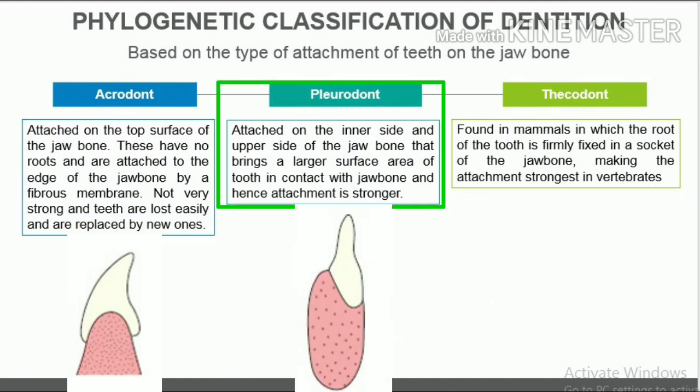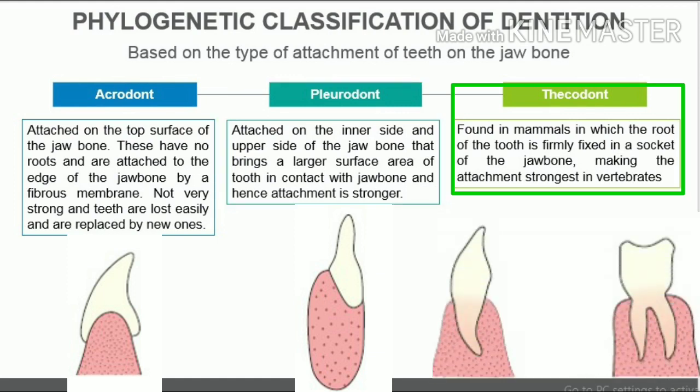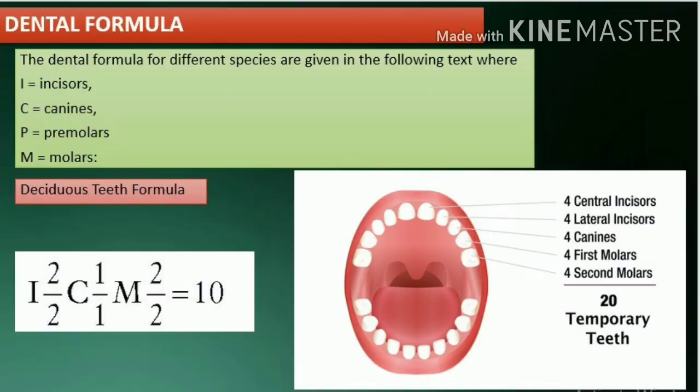Acrodont attachment is not very strong and teeth are lost easily and replaced by new ones. Pleurodont teeth are attached on the inner side and upper side of the jawbone, bringing a larger surface area of tooth in contact with the jawbone, making the attachment stronger. Thecodont dentition is found in mammals where the root of the tooth is firmly fixed in a socket of the jawbone, making the attachment the strongest in vertebrates.